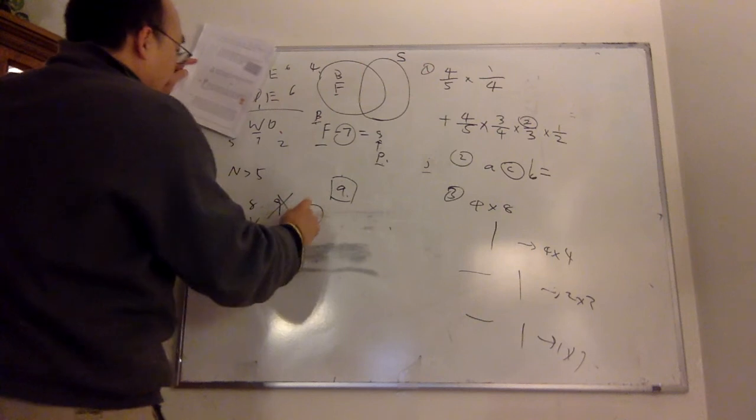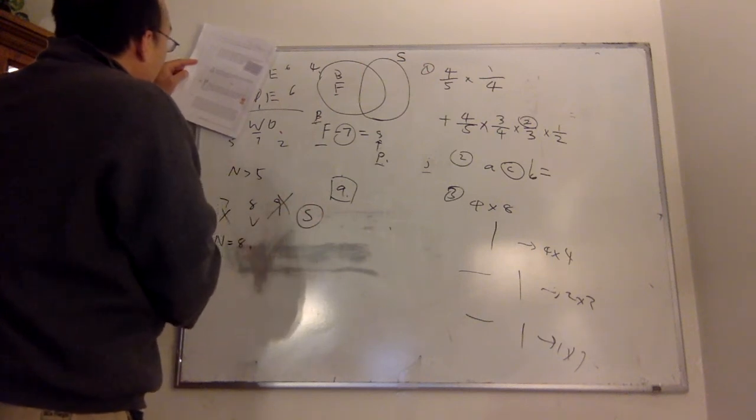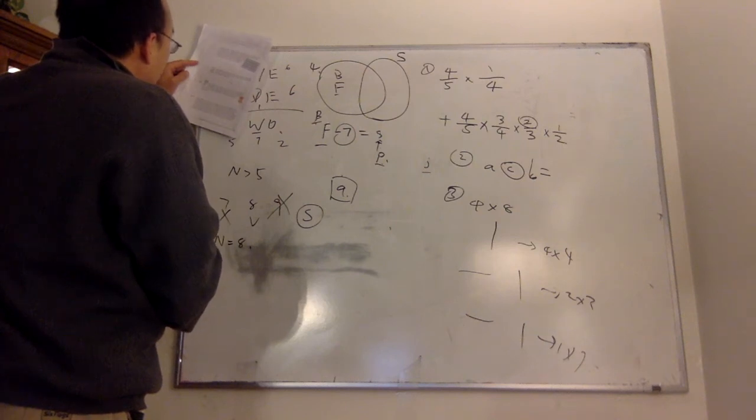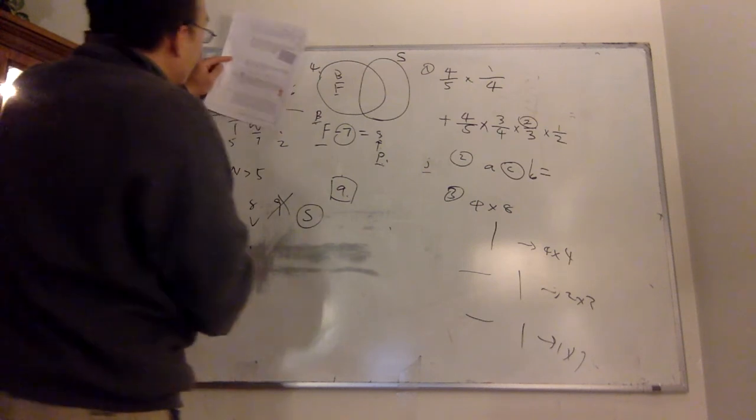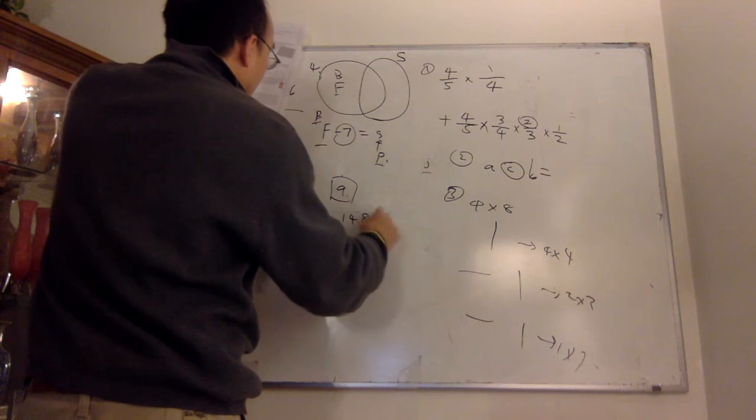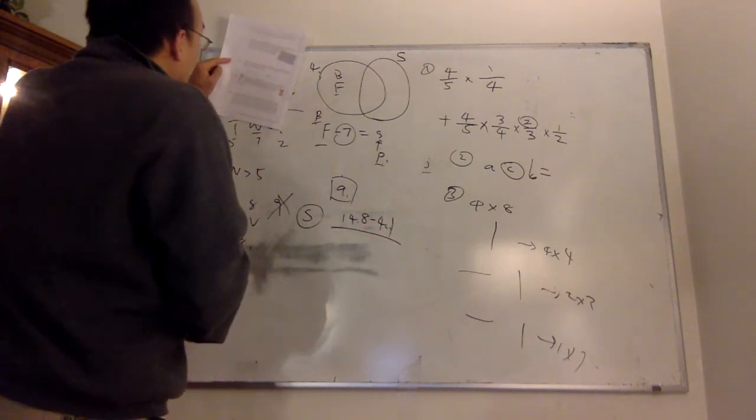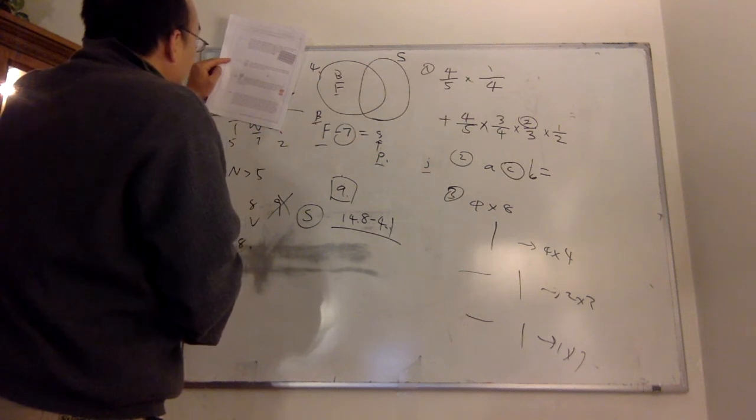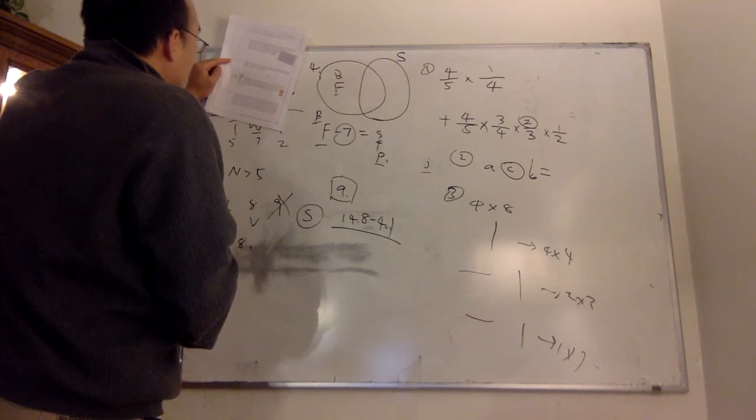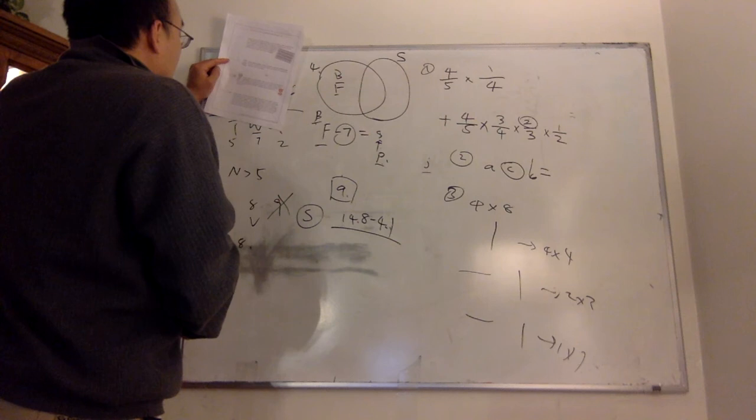So problem 5. Marcia wants to estimate the total weight of the sand in her sandbox. She has a drinking glass whose interior is a cylinder with diameter of 2 inches and height 4 inches. The glass weighs 4.1 oz when empty. After she fills the glass with sand, the weight of the glass is 14.8 oz. So the sand is 14.8 oz minus 4.1. If the sandbox is a rectangle measuring 6 feet by 4 feet and the average depth of the sand is 6 inches, what is the total weight of the sand in the sandbox? Express the answer as a whole number to the nearest hundred.